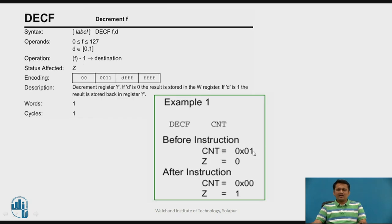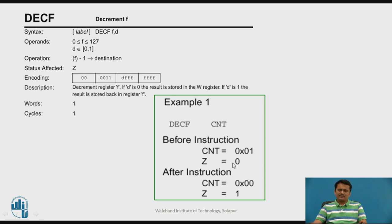For loop counters, the decrement file register instruction is useful: DECF subtracts 1 from the file register and stores the result in the destination. The zero flag is affected if the result is 0. It is a single-word, single-cycle instruction. Example: DECF CNT — before execution CNT is 01 and zero flag is cleared; after execution CNT becomes 00 and the zero flag is set because the result is 0.